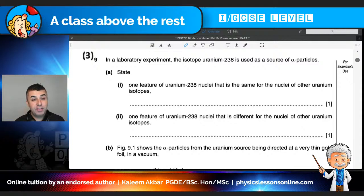In a laboratory experiment the isotope uranium-238 is used as a source of alpha particles. Question part A. State one feature of uranium-238 nuclei that is the same for the nuclei of other uranium isotopes. So there's a couple of things that have been mentioned. Alpha particles - what do you need to know about them? They are helium nuclei, the nucleus of helium not the atom. Atoms have outer electrons. Alpha particles are helium nucleuses and they are the most ionizing radiation.